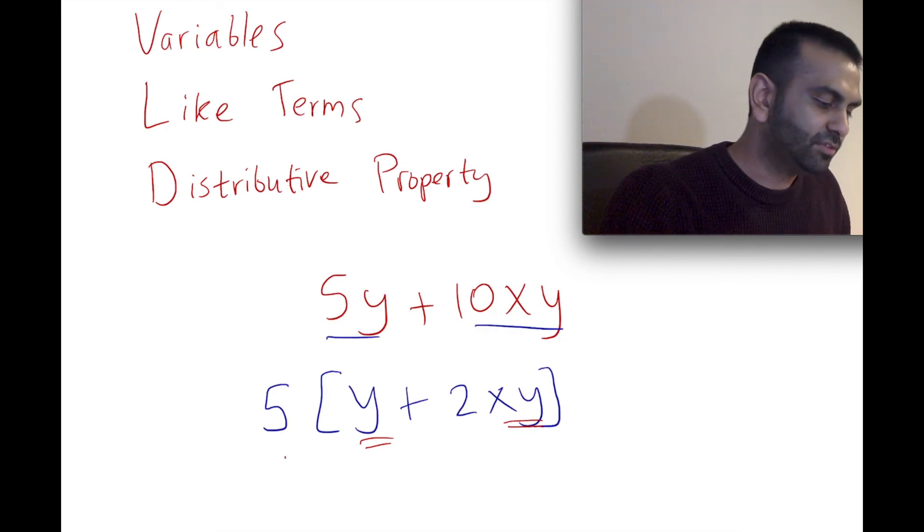So if you pull out the Y in addition to that 5, the first term here you're left with just a 1, and here you're left with just a 2X because the Y goes away. And there you go, that's how this is factored.